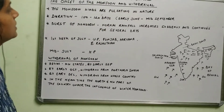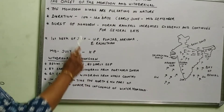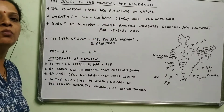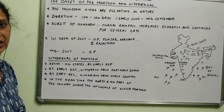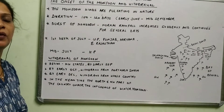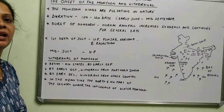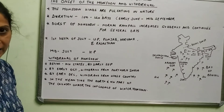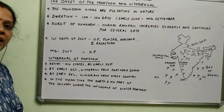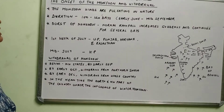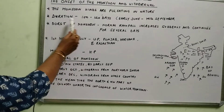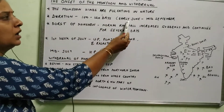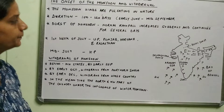The monsoon in India — its winds are pulsating in nature, that is they are moving in nature. They keep on moving from the plain areas to the hilly areas and then coming back to the plain areas. Its duration is of 100 to 120 days, from early June till mid-September.